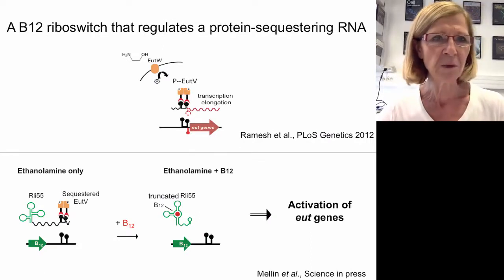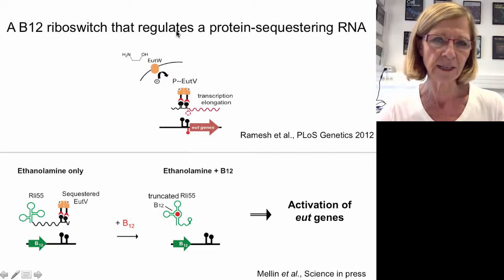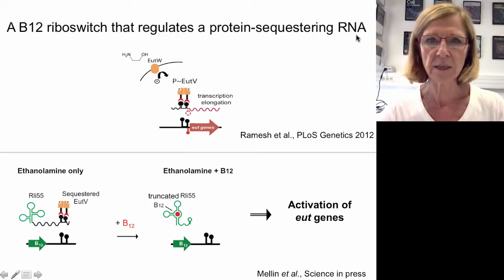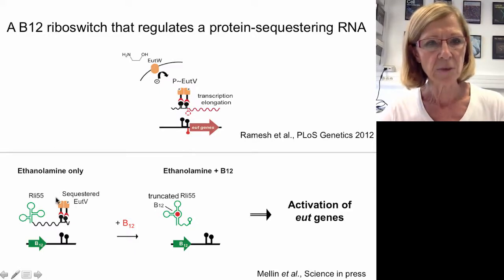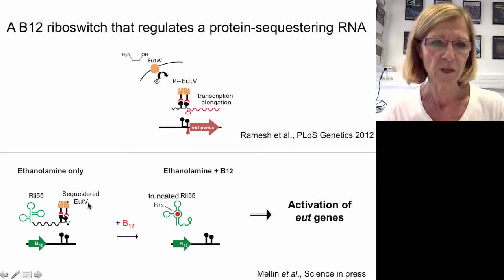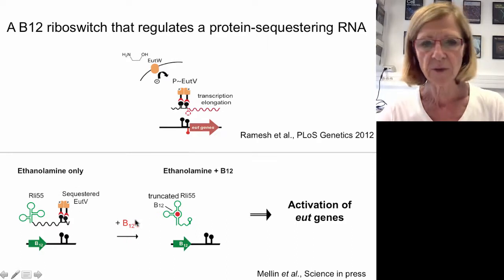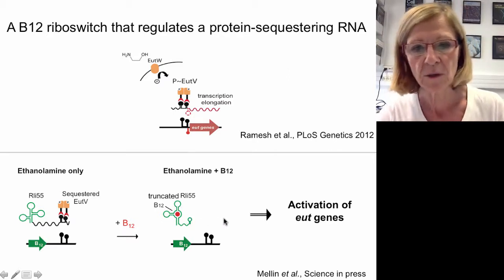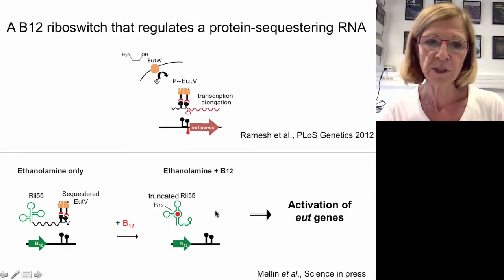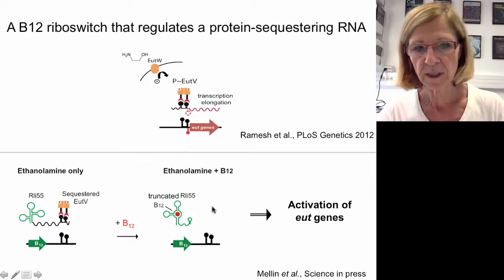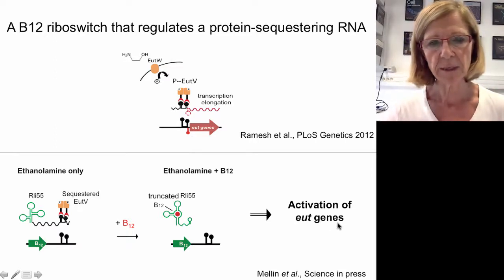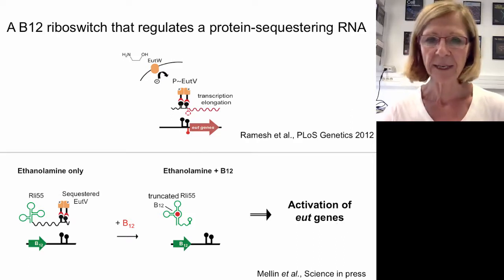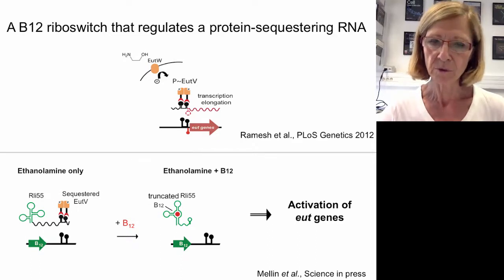We found another example of a B12 riboswitch regulating a non-coding RNA — a protein-sequestering RNA. This riboswitch is upstream of a non-coding RNA which can sequester a regulatory protein called EutV. In the absence of B12, a small RNA is made which sequesters EutV. In the presence of B12, the riboswitch prevents expression of the small RNA. There is no RNA to bind the protein, EutV is released and can activate the ethanolamine utilization genes. So in the presence of ethanolamine and B12, the bacteria can utilize ethanolamine.